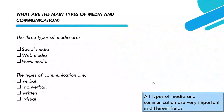What are the main types of media and communication? The main types of media are social media, web media, and news media. The types of communication are verbal, non-verbal, written, and visual. All types of media and communication are very important in different fields.